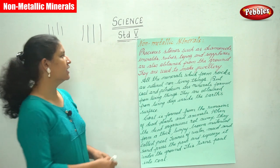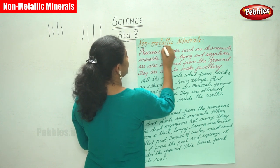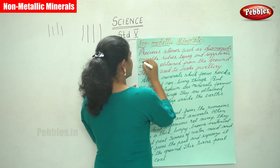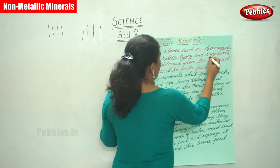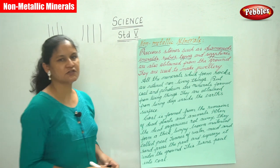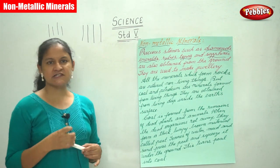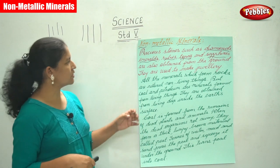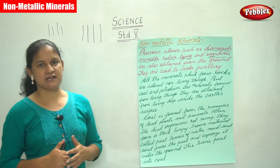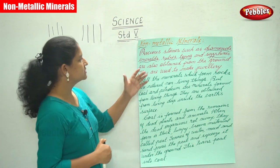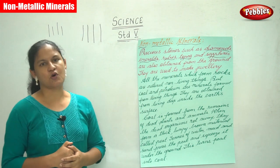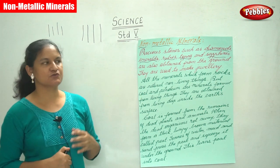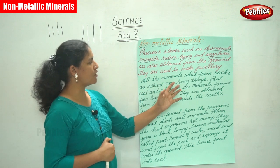The next type of mineral is non-metallic minerals. Precious stones such as diamonds, emeralds, rubies, topaz, and sapphires are also obtained from the ground. We have already seen that minerals can either be found on or inside the earth's crust. These precious stones are used to make jewelry.